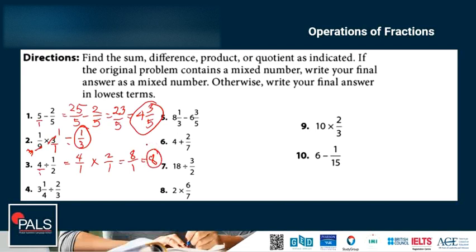Next is number 4. Change the mixed number to improper. So we have 3 times 4 is 12 plus 1 is 13. 13 over 4 times the reciprocal 3 over 2. So the answer is 13 times 3, 4 times 2, is 39 over 8. Then change to mixed number, we have 4 and 7 over 8.